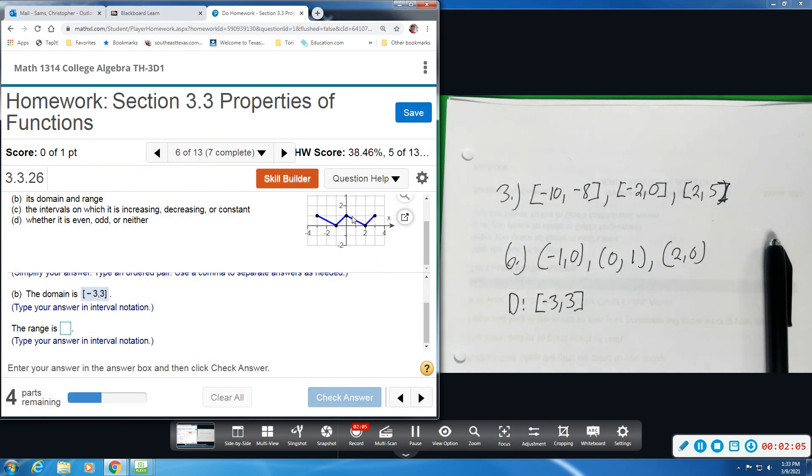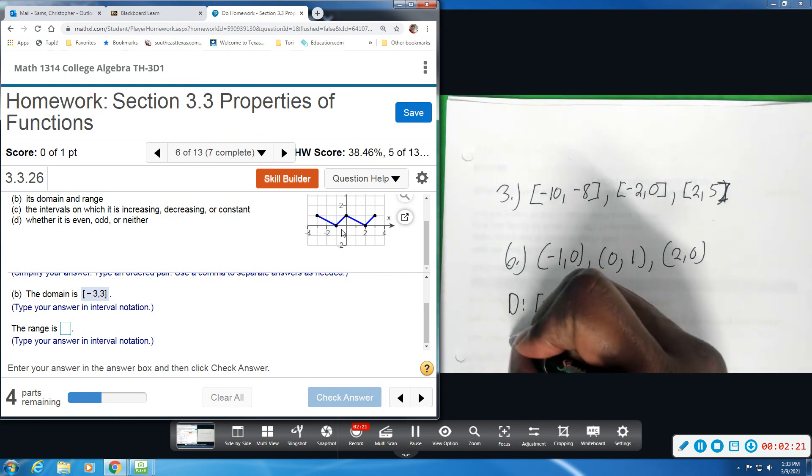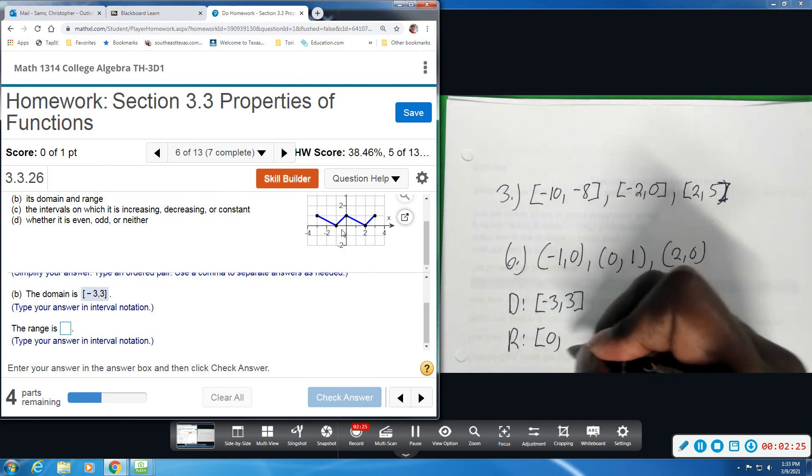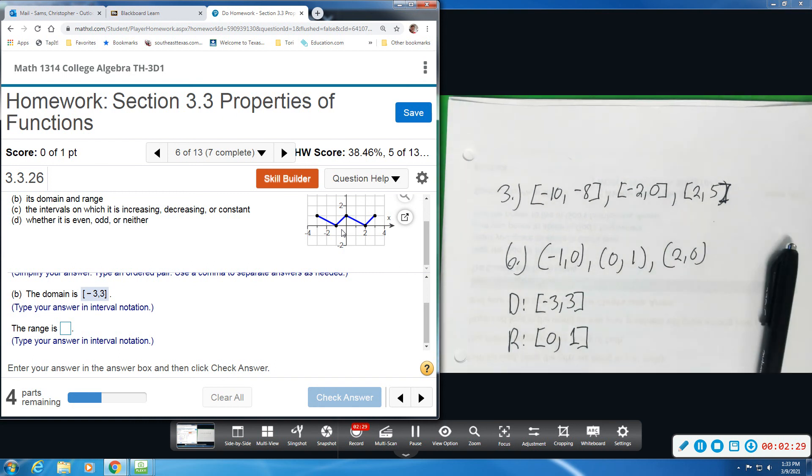All right, the range, we're going to go from bottom to top. The lowest we go on our graph is at the x-axis, that's a y-value of zero, and it comes up to a height of one. So only between zero and one is our range. Our range is listed from zero, including zero, up to one. So all the numbers from zero to one.